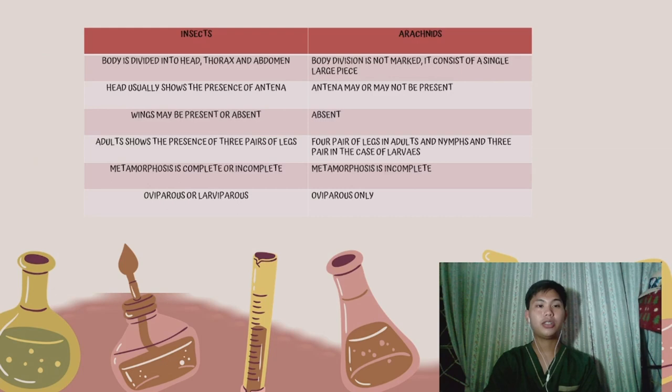In this section we'll be tackling the difference between insects and arachnids. An insect's body is divided into head, thorax, and abdomen, while in arachnids the body division is not marked — it consists of a single large piece. In insects, the head usually shows the presence of antennae.